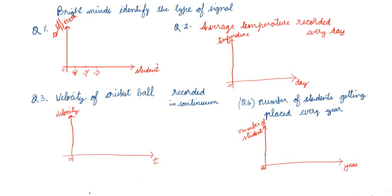Question 2: Average temperature recorded every day. The x-axis is the day (January 1st, 2nd, 3rd...) and the y-axis is the temperature. For each day, we take the average from midnight to midnight (0 to 24 hours). Identify what type of signal this is.